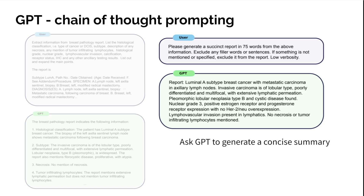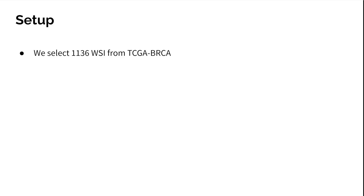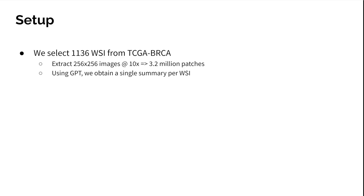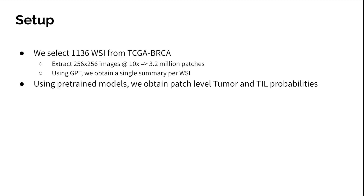Moving on to our setup, we utilize an open repository called the Cancer Genome Atlas Program, or TCGA, which contains whole slide images of various cancer types. We select 1,136 whole slide images from the breast invasive carcinoma collection and extract 256 by 256 patches at 10x magnification, resulting in 3.2 million patches for training. Using GPT, we obtain a single summary per whole slide image, and using pre-trained models, we obtain patch-level tumor and tumor-infiltrating lymphocyte probabilities for each patch.